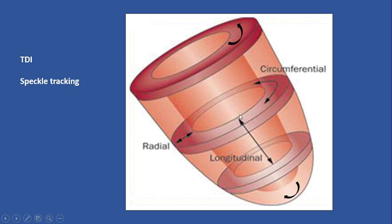We can measure strain globally for all of the left ventricle — called global longitudinal strain, global circumferential strain, and so on — or we can calculate strain for each wall or segment, called segmental strain. This presentation focuses more on global longitudinal strain, but others are mentioned as well.